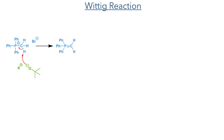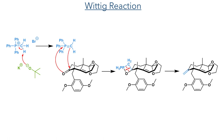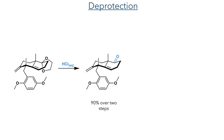In the next step, a Wittig reaction was carried out using methyl triphenylphosphonium bromide. This was first deprotonated by potassium tert-butoxide to form a ylide that then underwent addition to the carbonyl. This formed a four-membered oxaphosphetane intermediate that decomposes to form the alkene. A deprotection was then carried out using hydrochloric acid which hydrolyzed the acetal, forming the ketone in a 90% yield over two steps.